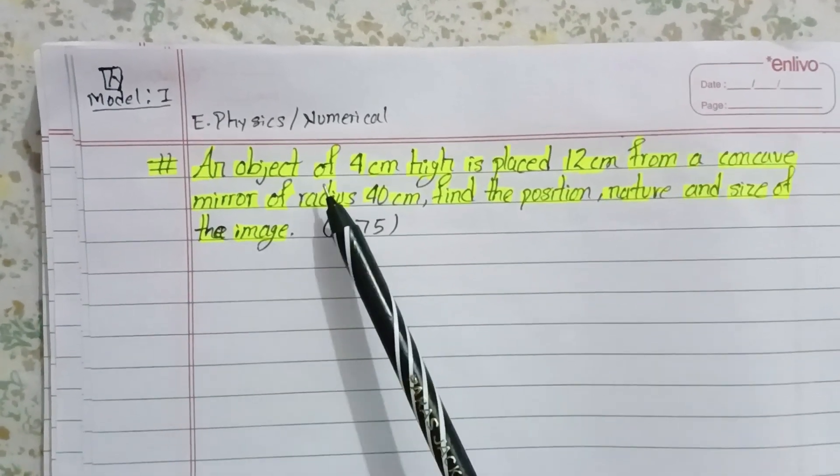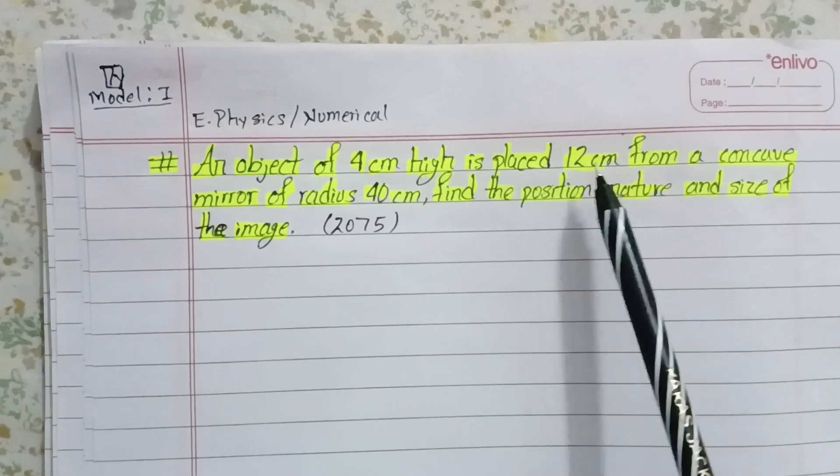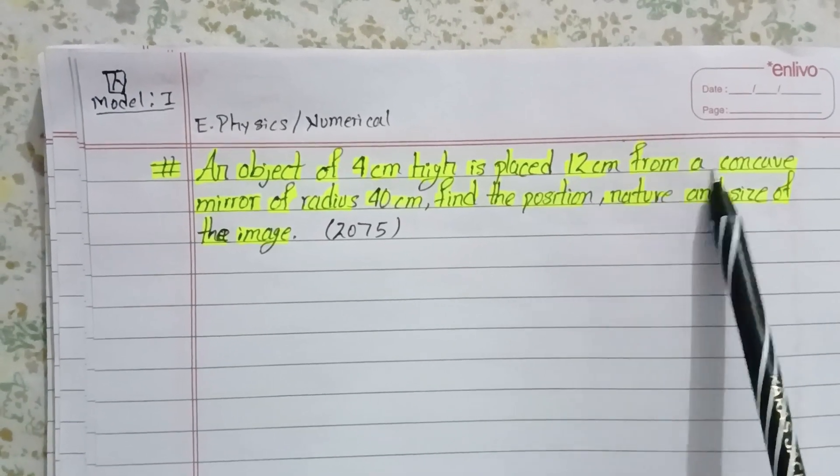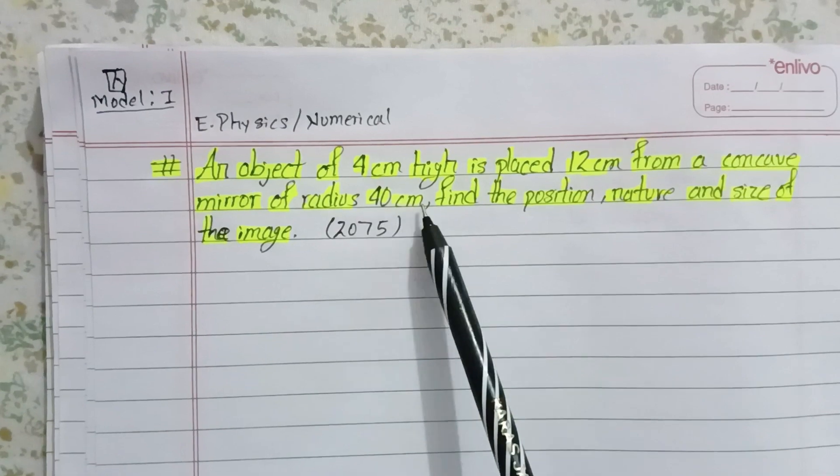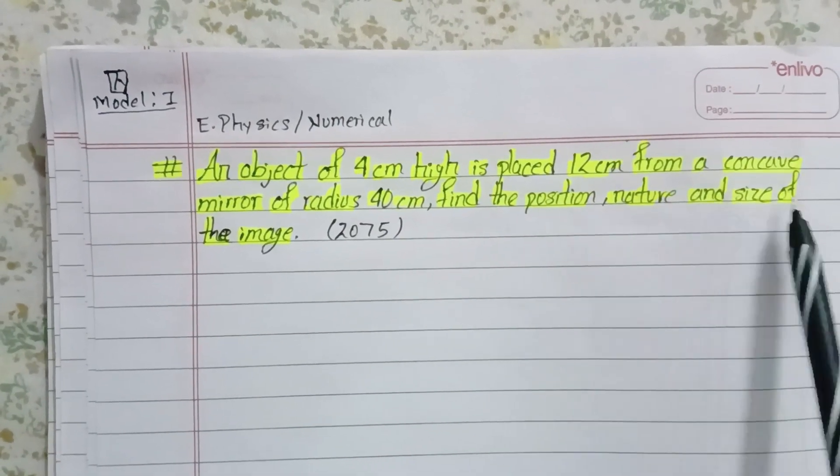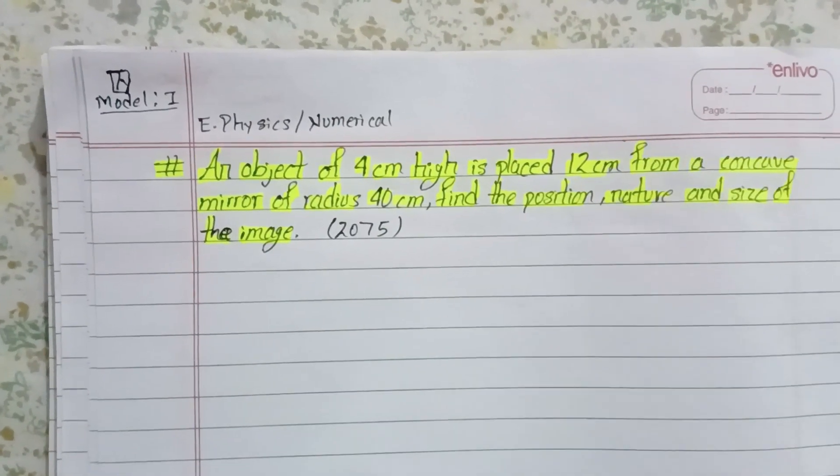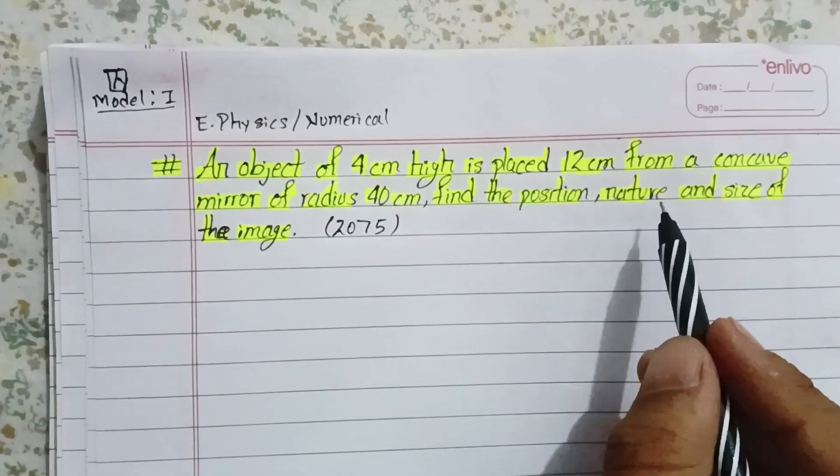The problem: An object of 4 centimeter height is placed 12 cm from a concave mirror of radius 40 cm. Find the position, nature, and size of the image.